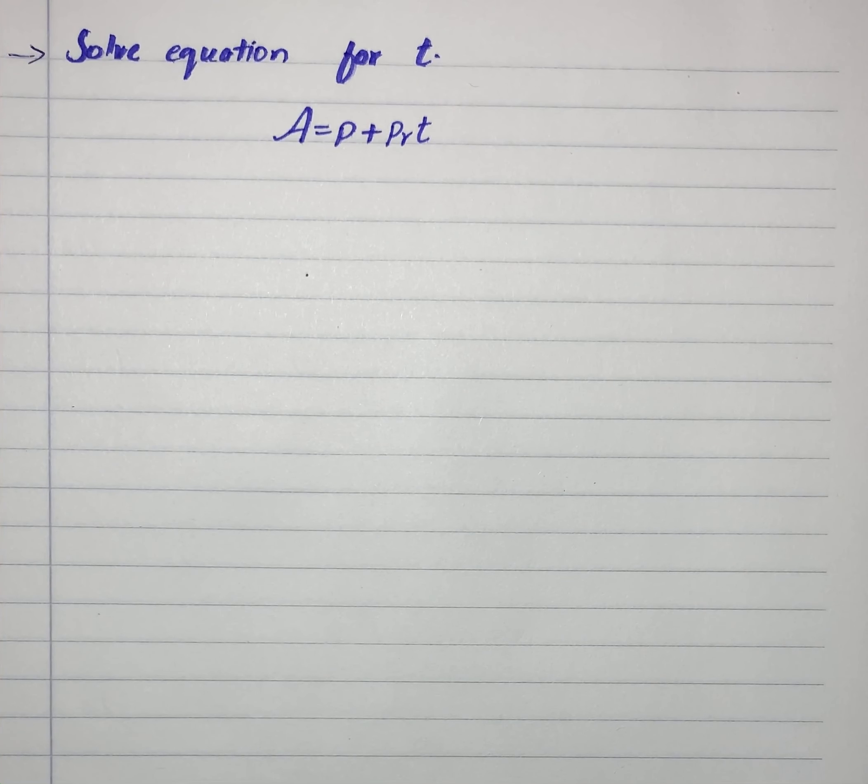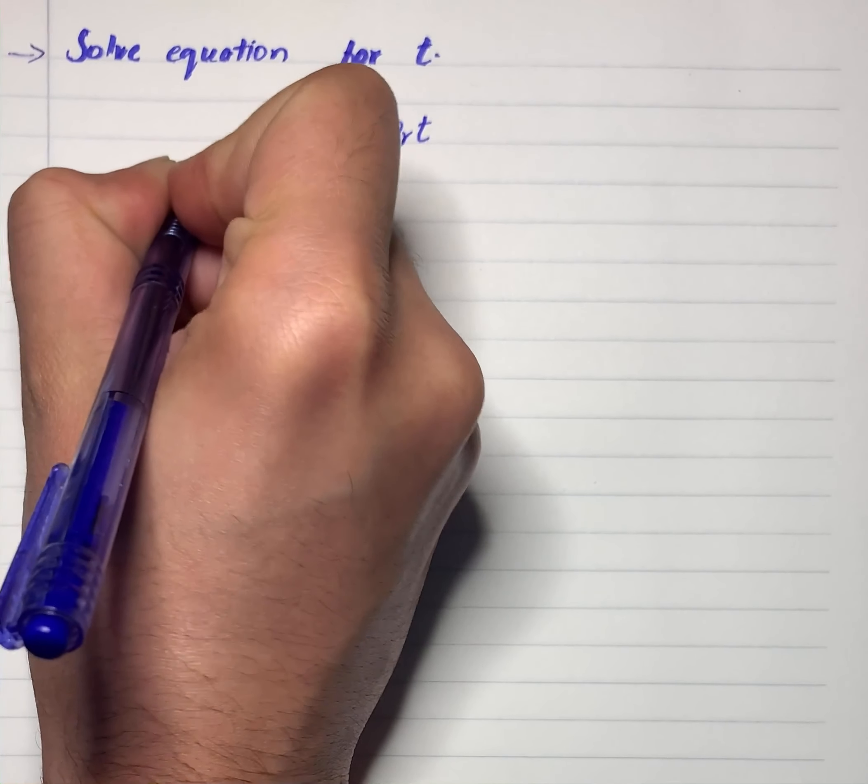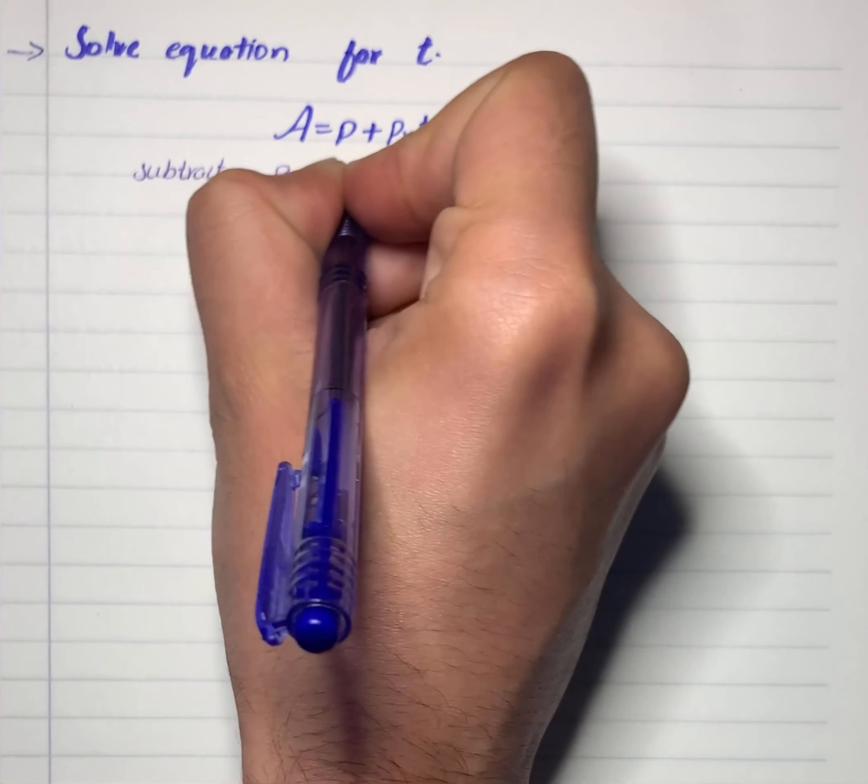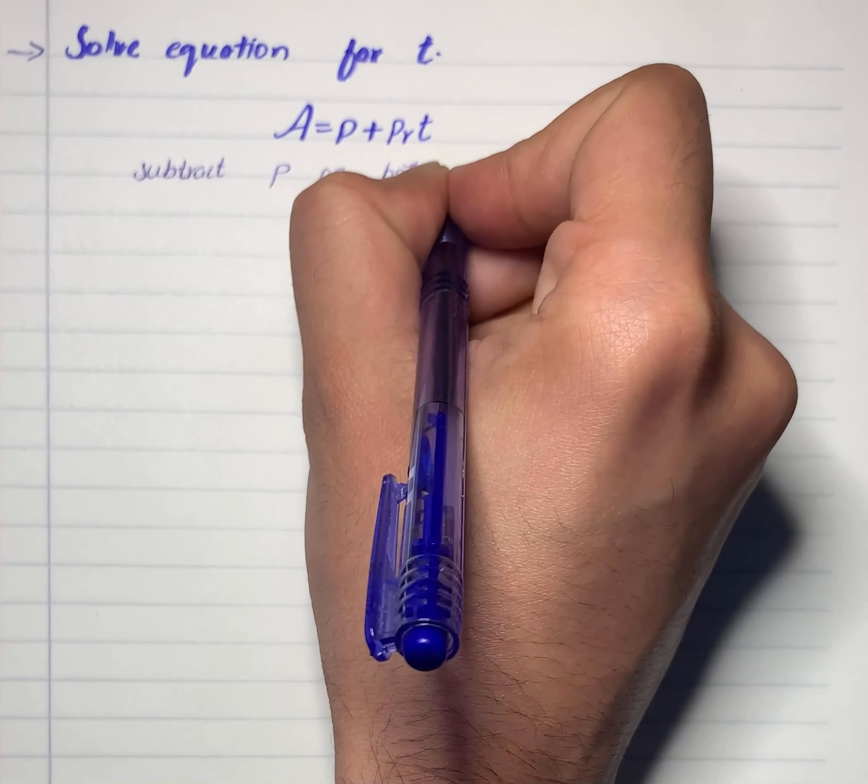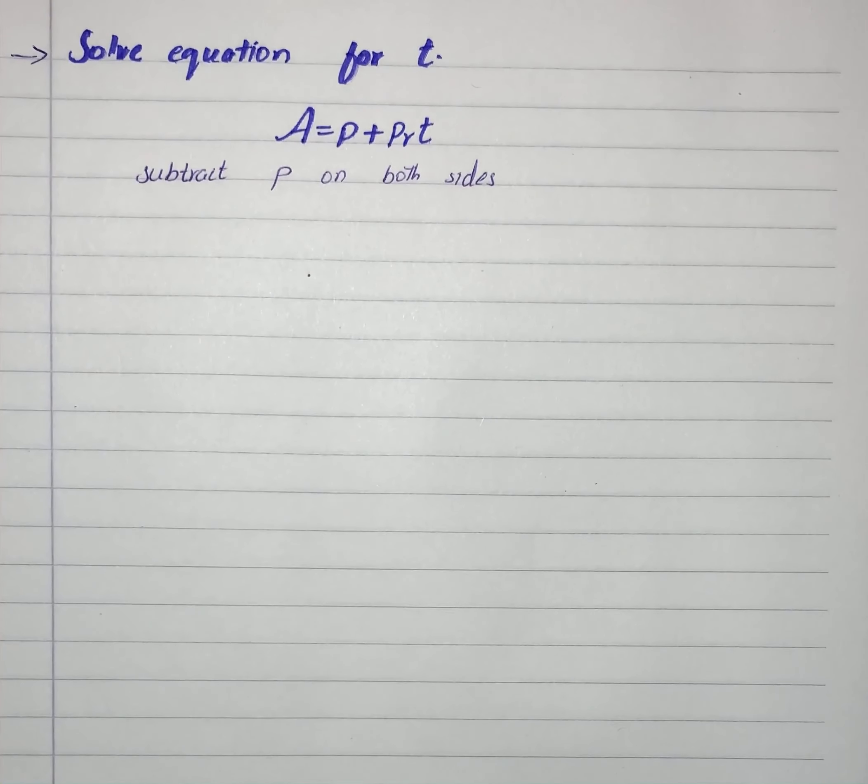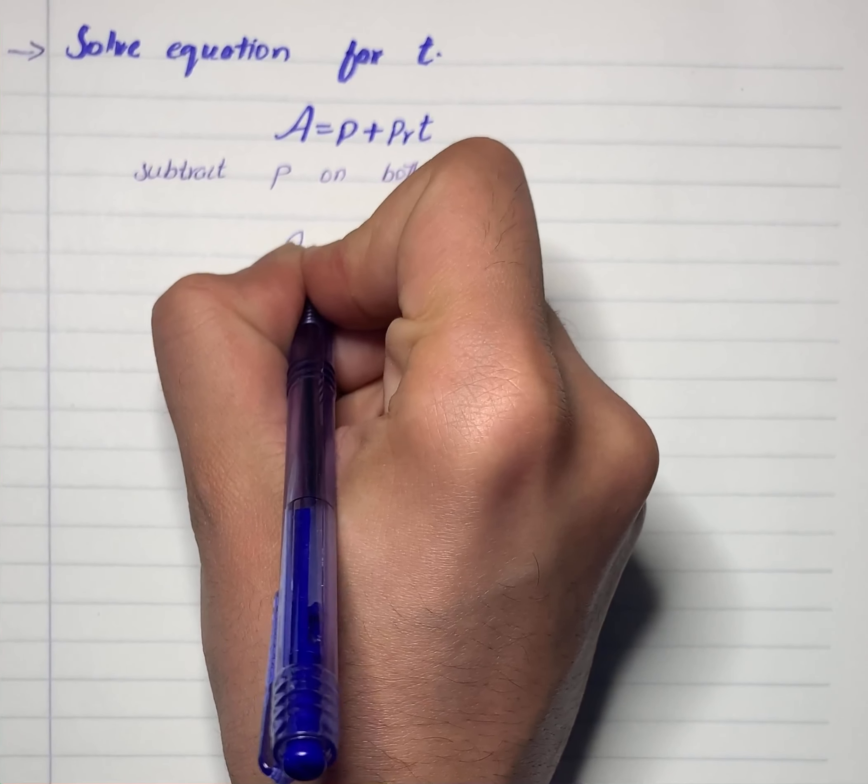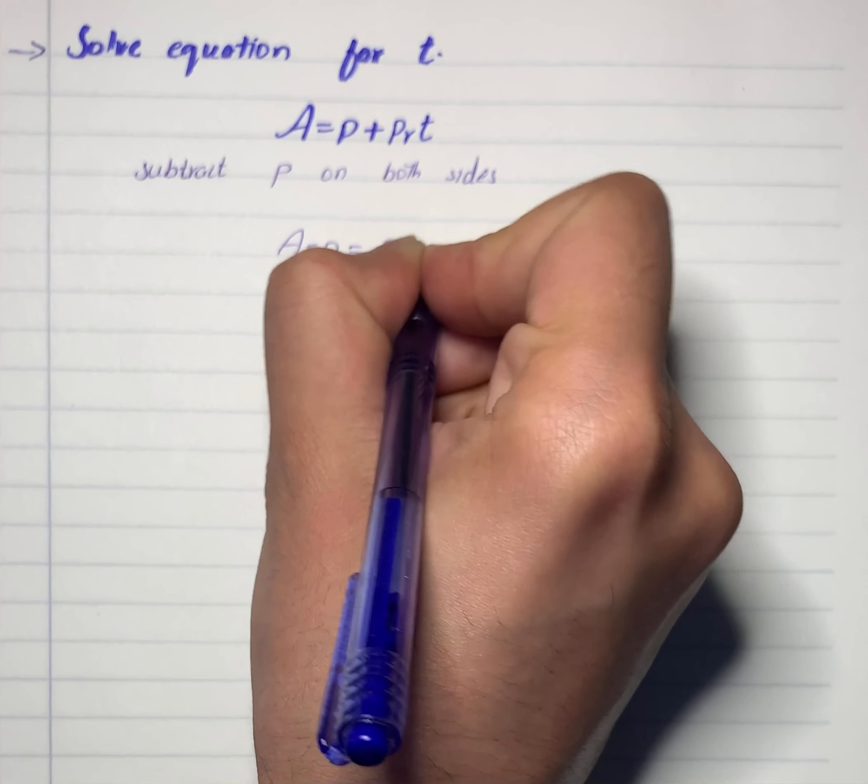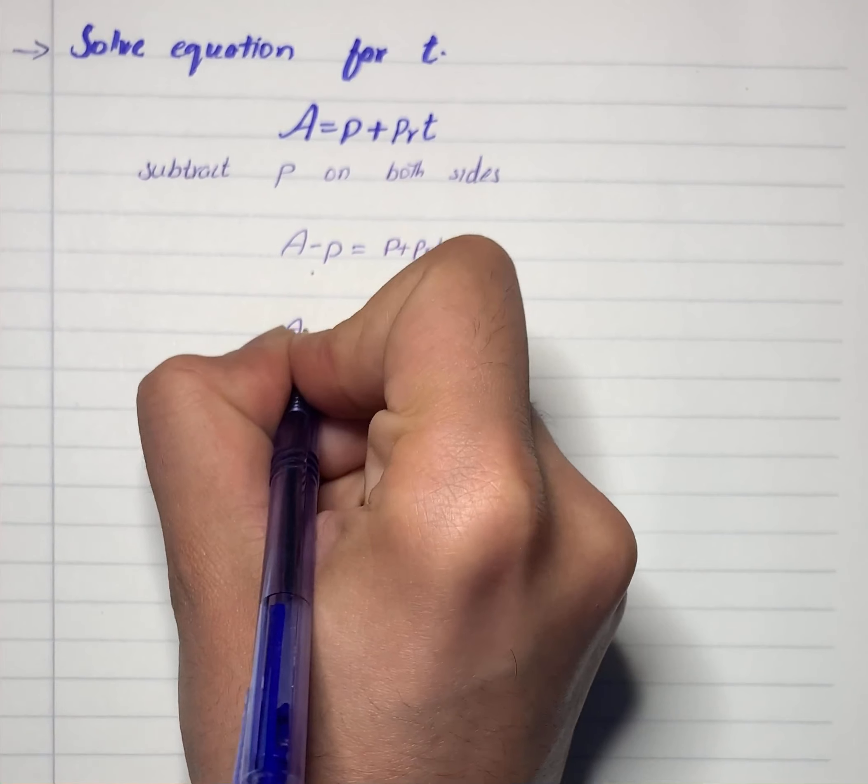Subtract P on both sides, and I will take out that P on the right-hand side. So the equation will become A minus P equals P plus PRT minus P. A minus P equals PRT.